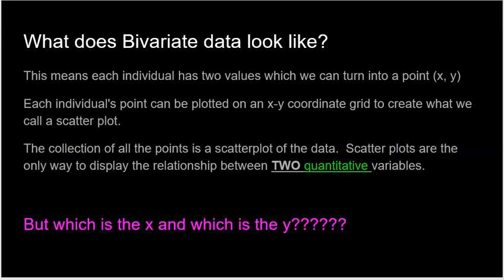All right, what does bivariate data look like? Well, this means each individual has two values, which we can turn into a point. X for the first value, Y for the second value. Each individual's point can be plotted on an XY coordinate grid to create what we call a scatter plot.